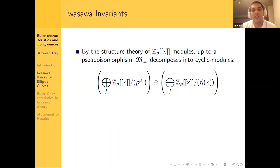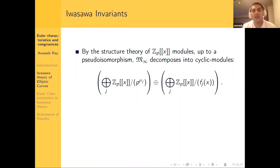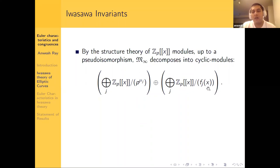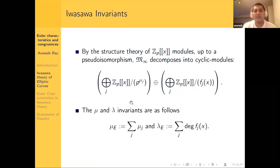Such finitely generated torsion Λ-modules have a simple structure to describe. Up to a pseudo-isomorphism, M_∞ decomposes into cyclic modules: each cyclic module is described by Z_P[[x]] modulo a certain polynomial or a power of P. The μ-invariant is the sum of the exponents of P that arise in this decomposition, and the λ-invariant is the sum of degrees of the distinguished polynomials.